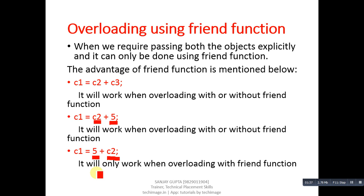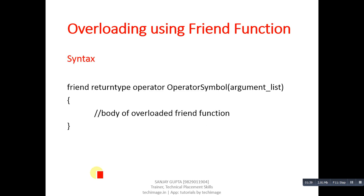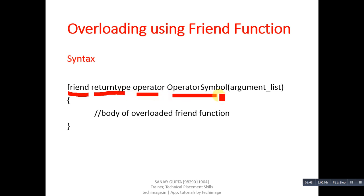This is the syntax of a friend function. First you use the keyword 'friend', then the return type, then the 'operator' keyword, then the operator symbol, and then the argument list. Inside the braces you define the body of the overloaded friend function.